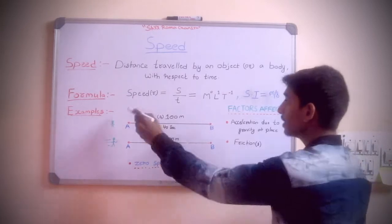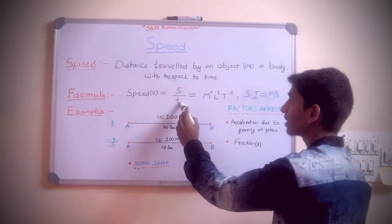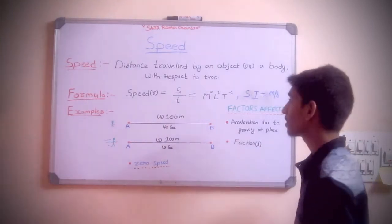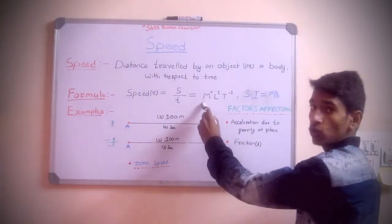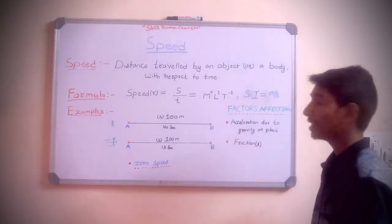The formula: speed is equal to s divided by t. Here r indicates the rate, s indicates the distance travelled, and t indicates the time taken. Dimensionally, it is represented as m^0 l^1 t^-1. The SI unit of speed is meter per second.